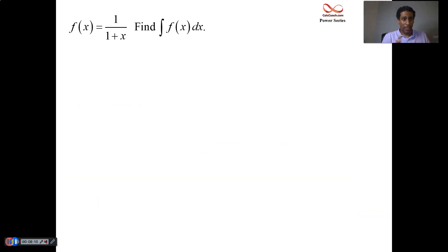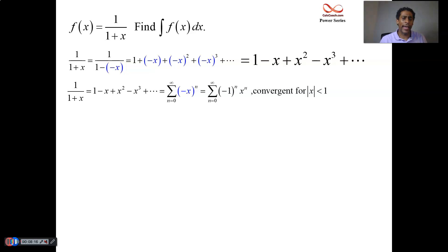Let's alter the 1 over 1 minus x to be 1 over 1 plus x again. We've seen that. We've done that already. Alternating. And let's integrate that. What's the antiderivative of 1 over 1 plus x? It's the natural log of 1 plus x.